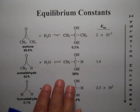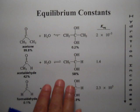I have the equilibrium constants of a ketone, aldehyde, and formaldehyde, and what we're basically trying to figure out is how much the groups attached to the carbonyl can donate electron density.